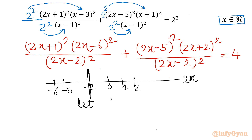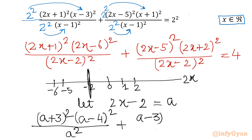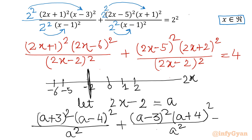Let us consider 2x-2 = a. So 2x+1 becomes (a+3)², and 2x-6 becomes (a-4)², with denominator a². Plus 2x-5 becomes (a-3)², and 2x+2 becomes (a+4)², with denominator a². Right hand side is 4.